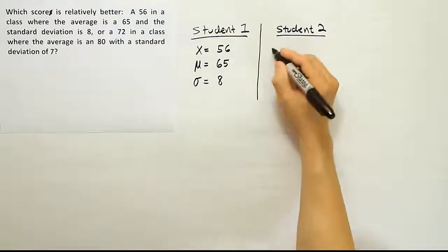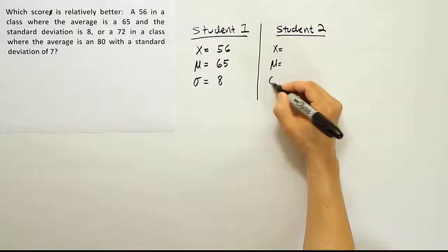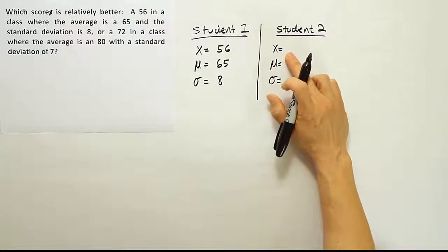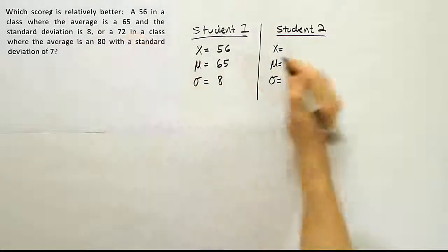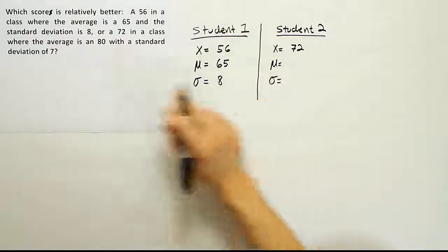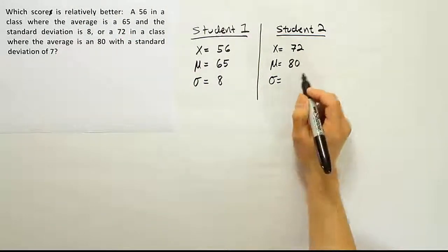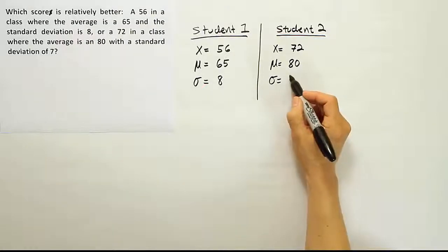For student 2, we also need the same items. The score for student 2 was 72 in a class where the average was 80, and the standard deviation was 7.